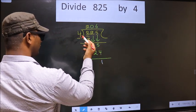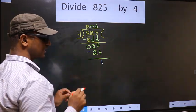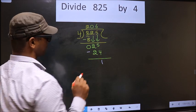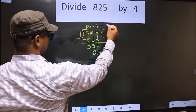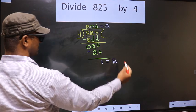1 is smaller than 4. No more numbers to bring down. So this is where we stop. Therefore, this is our quotient. And this is our remainder.